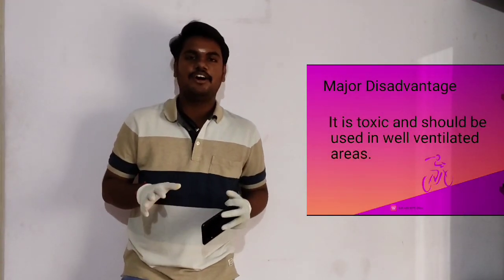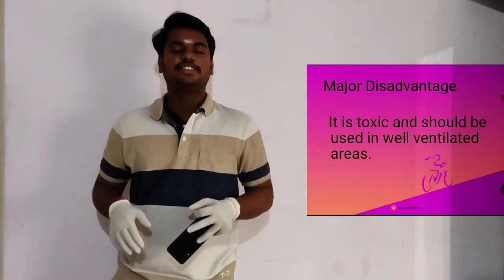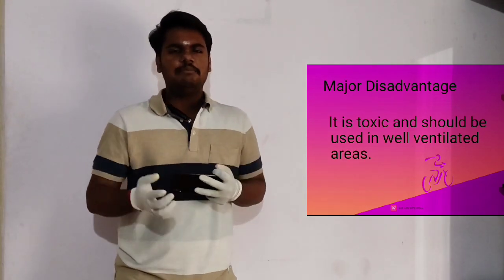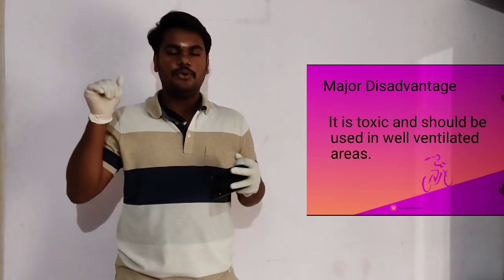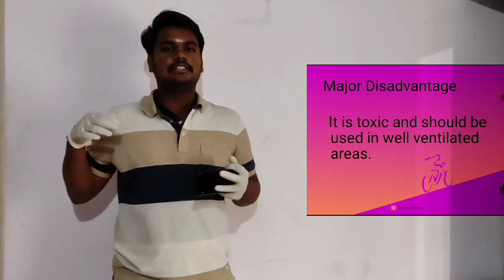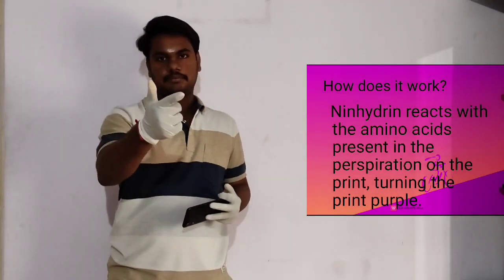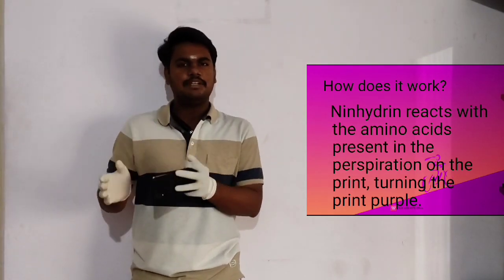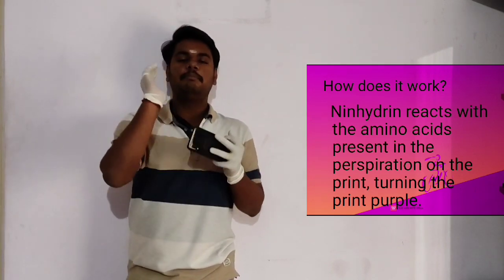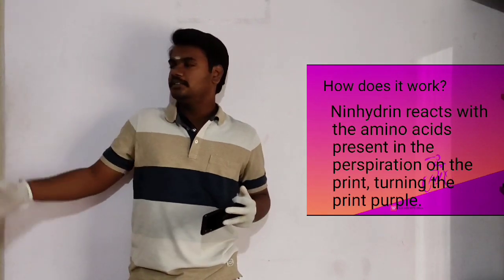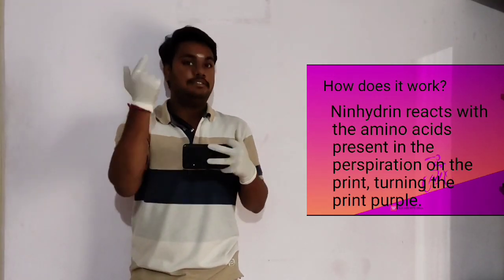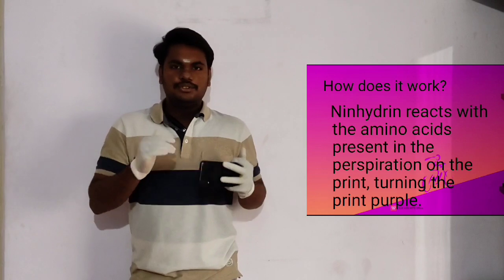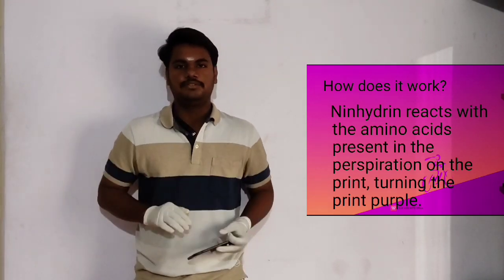So we have covered the advantages and disadvantages of the Ninhydrin method. In the next slide you can see the chemical reactions involved. To summarize: our sweat is composed of various chemicals including sebum and oil. Sebum contains proteins, and it is on that basis that Ninhydrin reacts, producing a purple color visible against a white surface. I have added a fingerprint developed using Ninhydrin in the slides. Now we move to Iodine Fuming — what is Iodine Fuming?